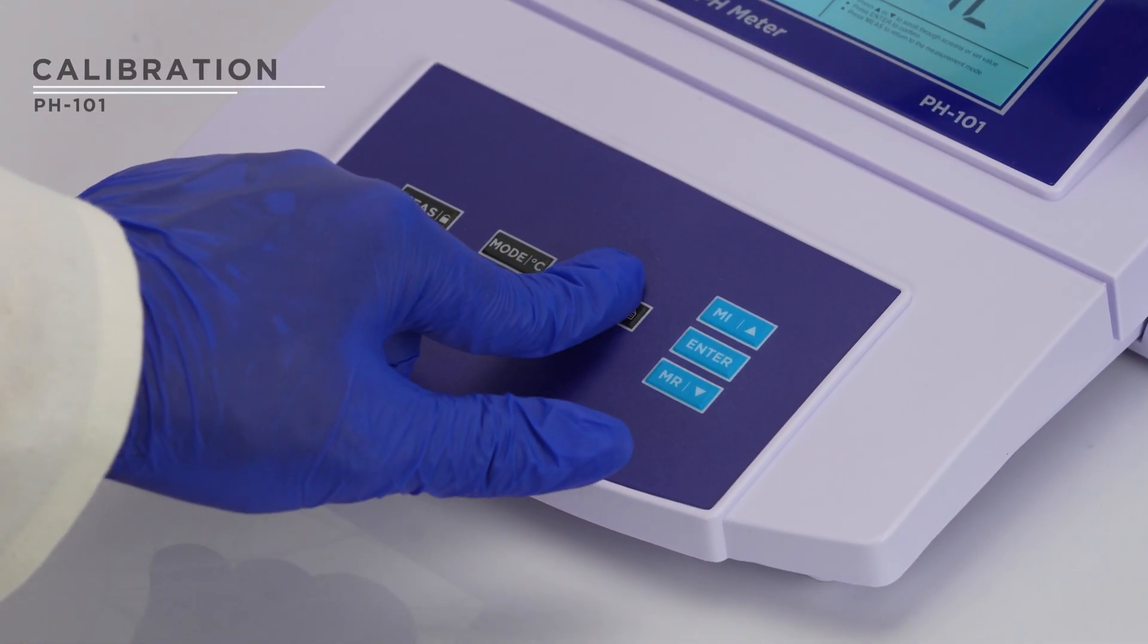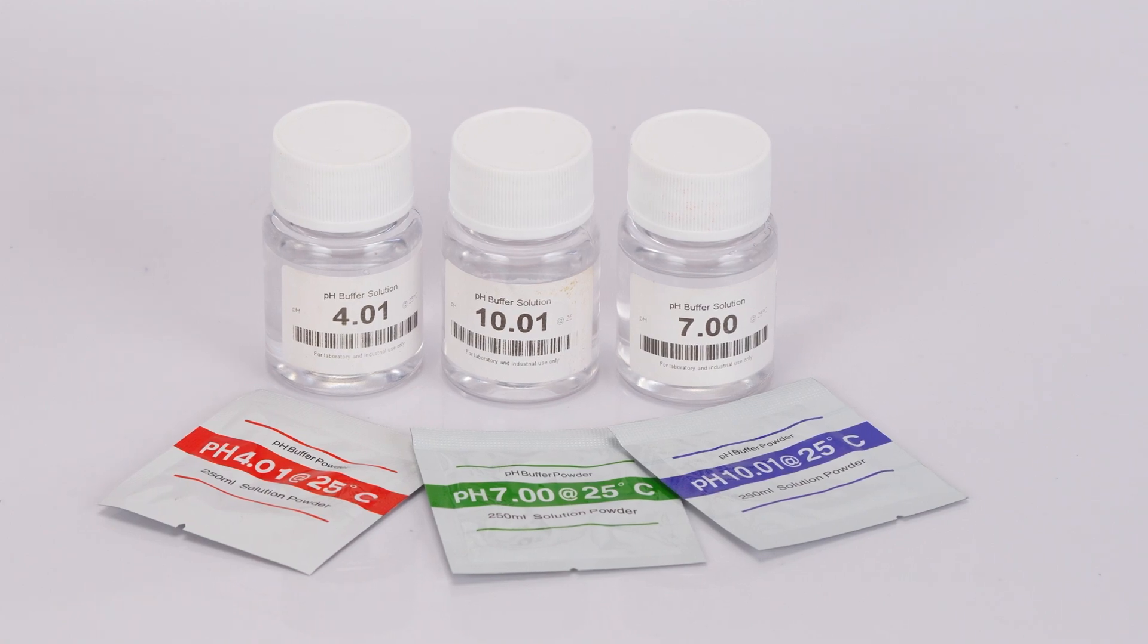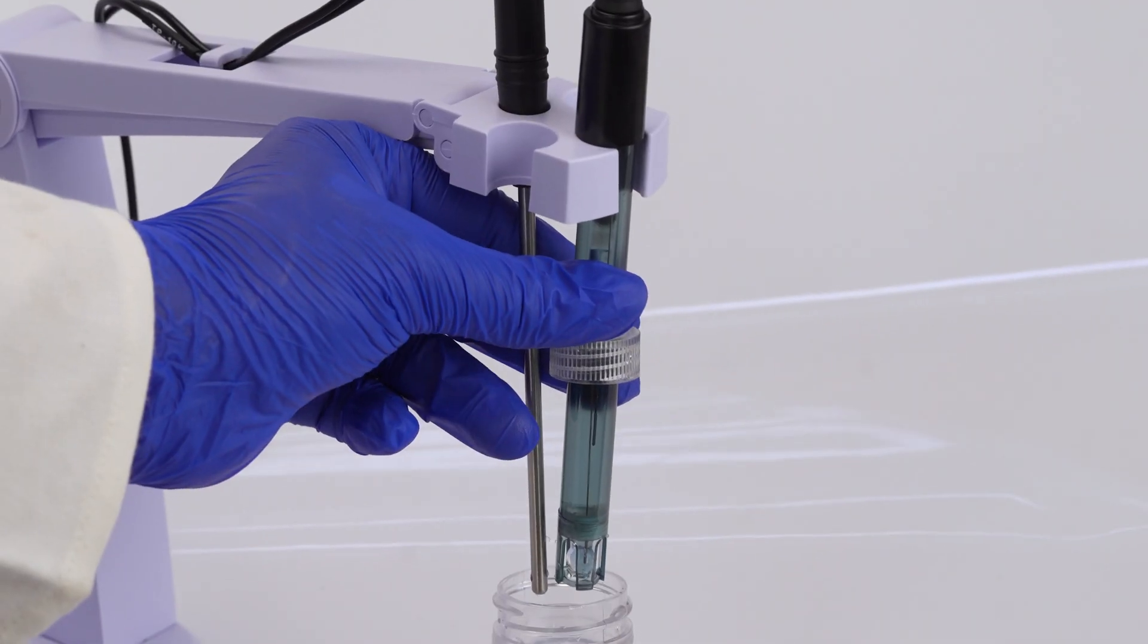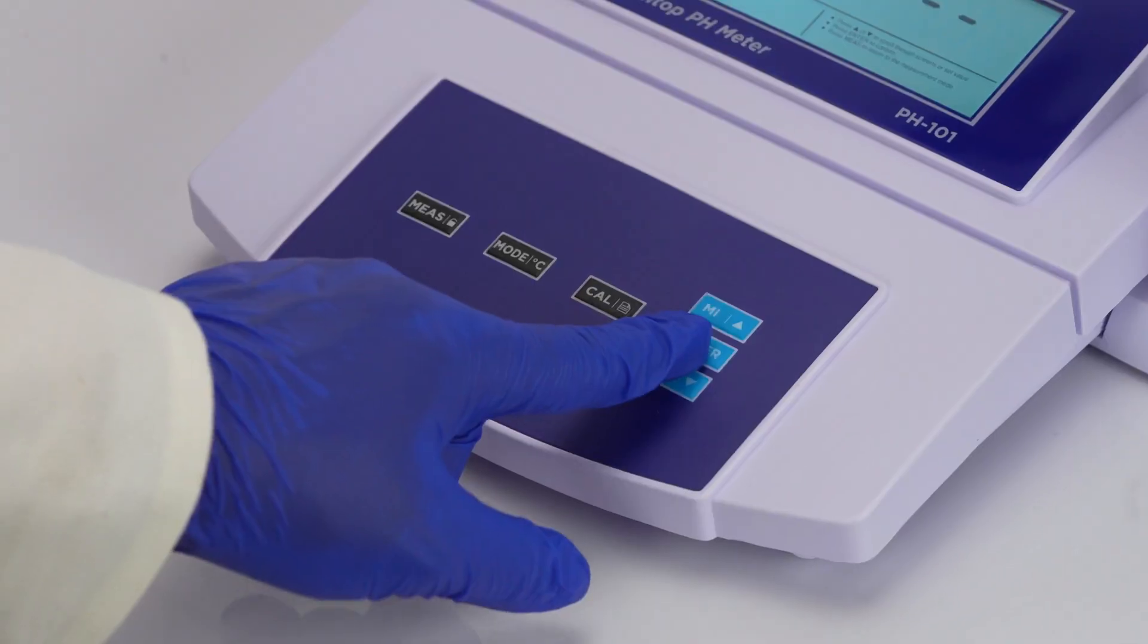Press the cal key to start calibration with three standard buffer solutions. Rinse the electrode, immerse it in the first buffer, and press enter.